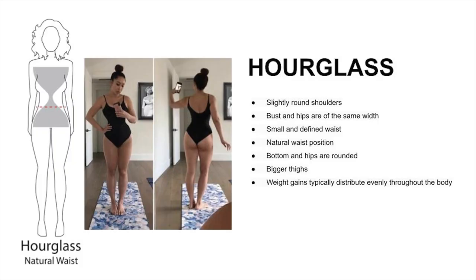We're starting off with the hourglass shape. Here are the key elements: slightly round shoulders, bust and hips are the same width, small and well-defined waist with a natural waist position — neither high nor low. Bottom and hips are well-rounded, bigger thighs tapering downwards. Typically, weight gain is evenly distributed throughout the body.